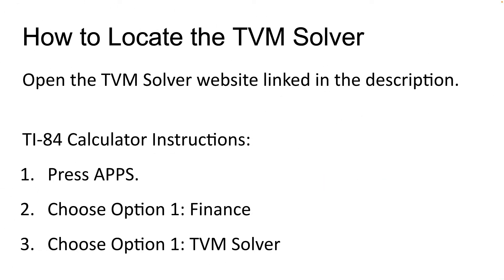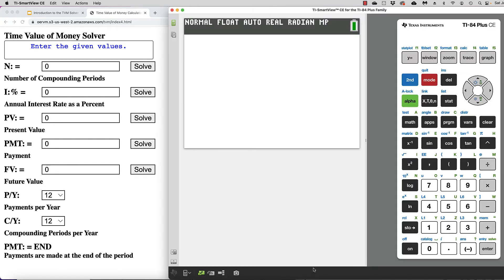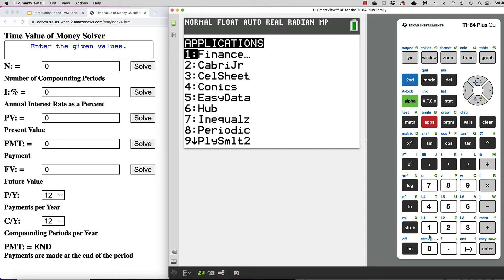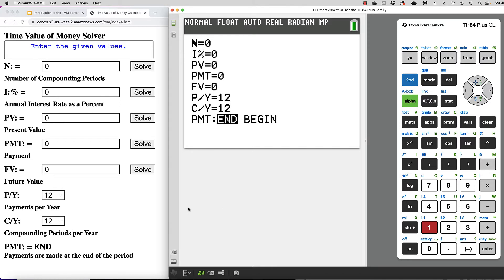Let's look at how to locate the TVM solver. If you look at the description of this video, you'll find a link to a free TVM solver website application. If you have a newer version of the TI-84 calculator, it may include the TVM solver application. To locate the TVM solver on the TI-84, press the apps button, then choose option one for finance, and then option one again for the TVM solver. Both the web application and the TI-84 TVM solver involve the same variables: N, I percent, PV, PMT, FV, PY, CY, and PMT.